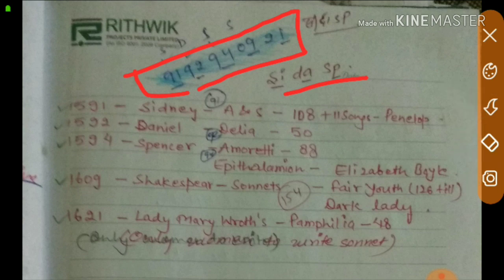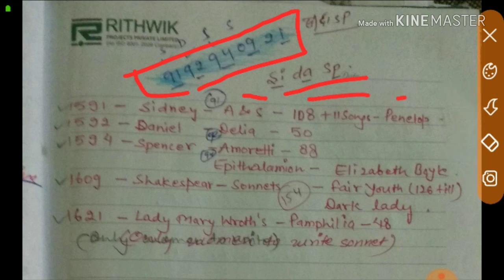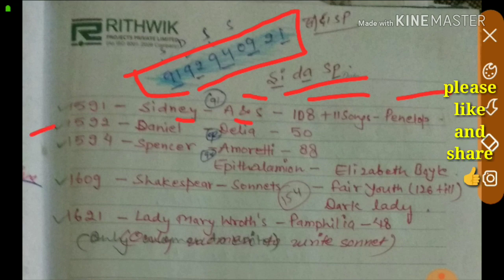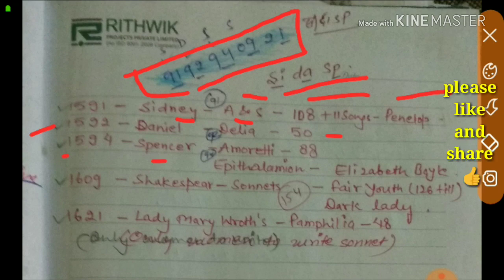For sonnet sequences: 1591 by Sidney — Astrophel and Stella — 108 sonnets and 11 songs for Penelope. 1592 — Daniel's Delia was published, which had 50 sonnets. 1594 by Spenser — Amoretti and Epithalamion for Elizabeth Boyle — 88 sonnets.